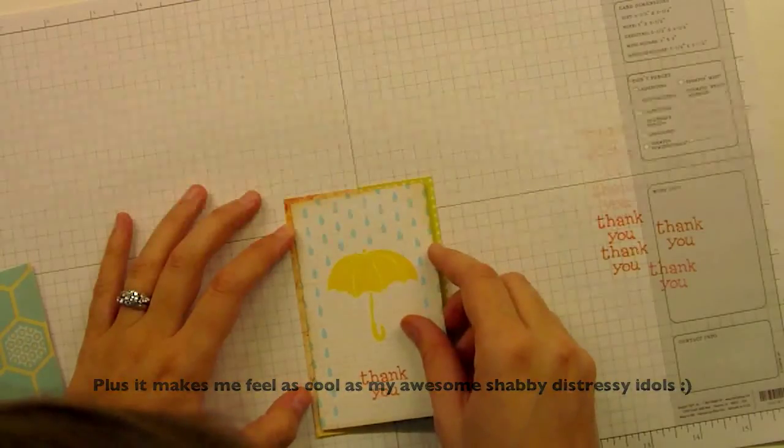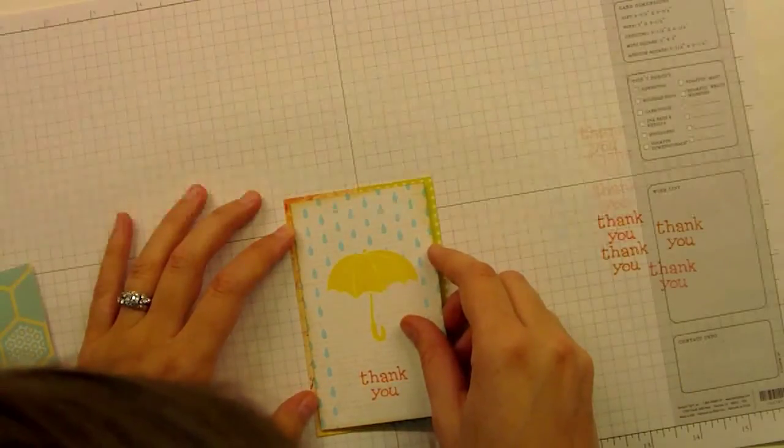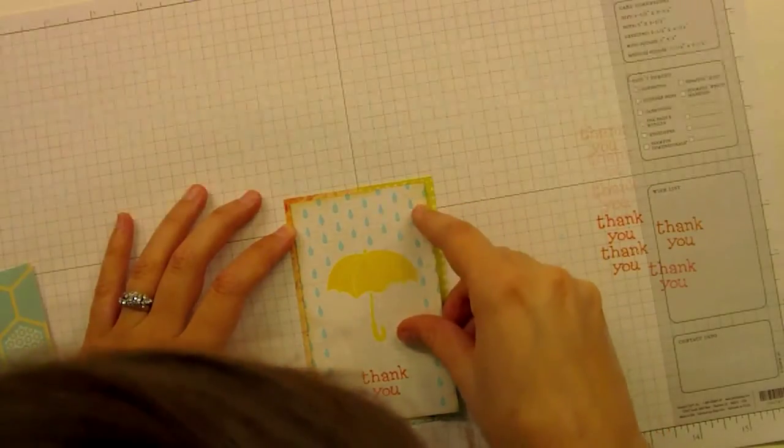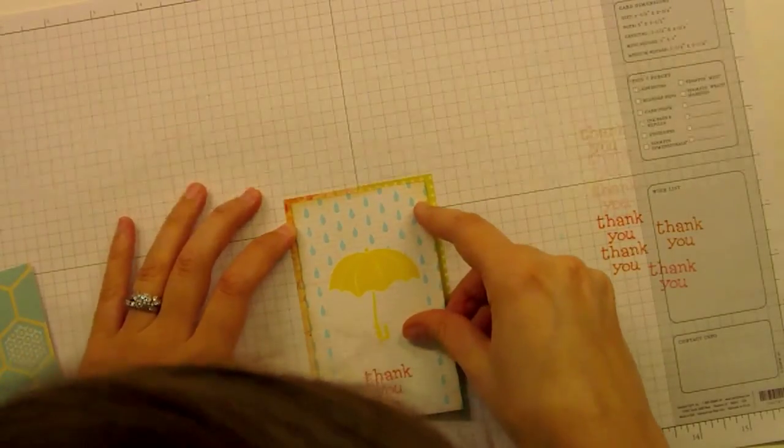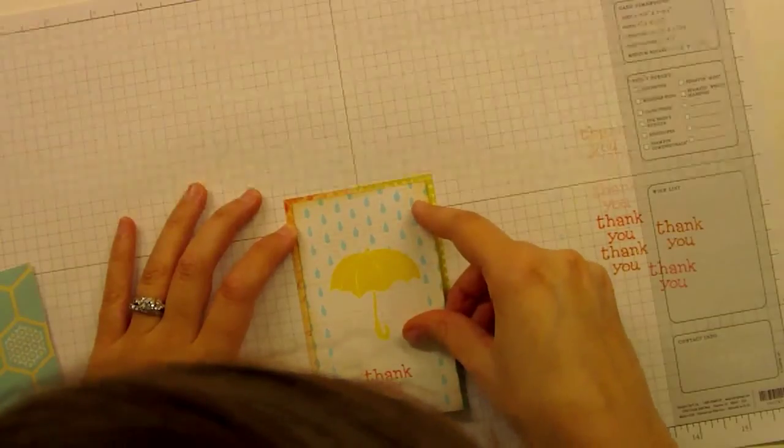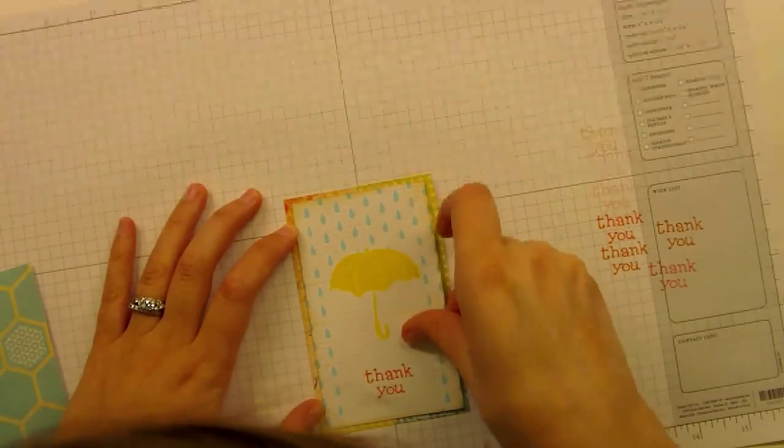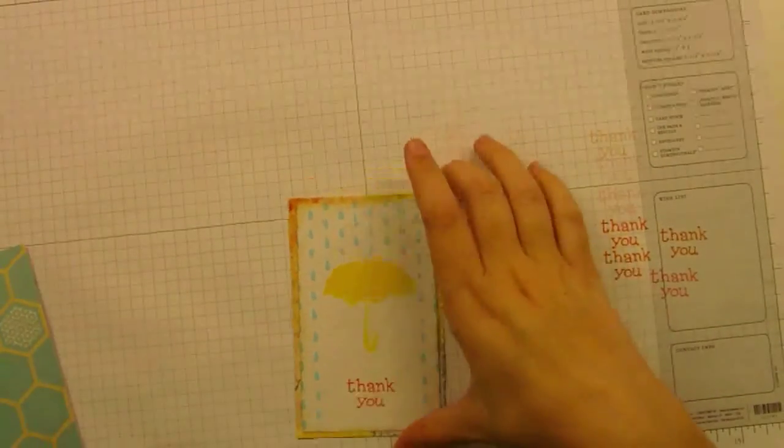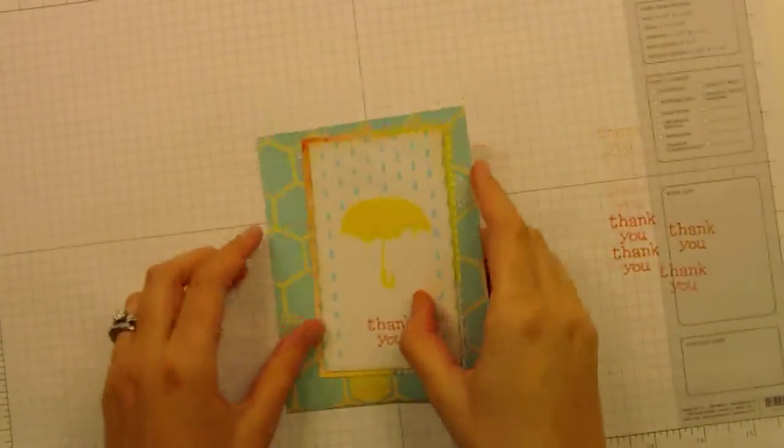So right now I'm adhering my little panel onto some Girls Paperie paper. The Girls Paperie stuff is so pretty. And it's this patchworky paper. I think that might be the name. But on my blog I'll have all the products that I used in the video written out. But there's my panel and now it's ready to go on my card.